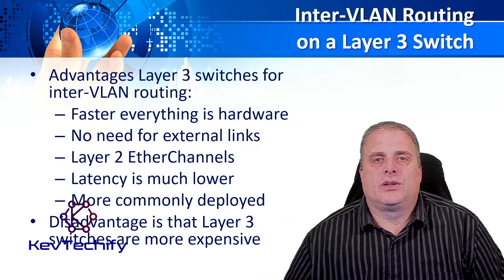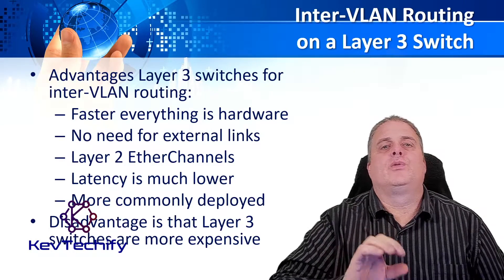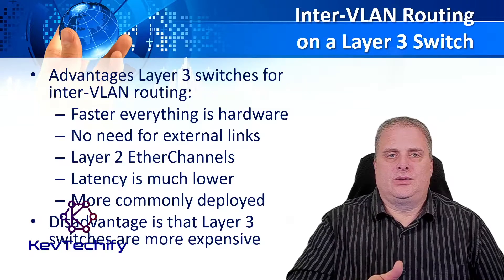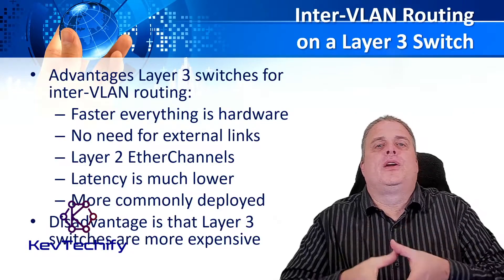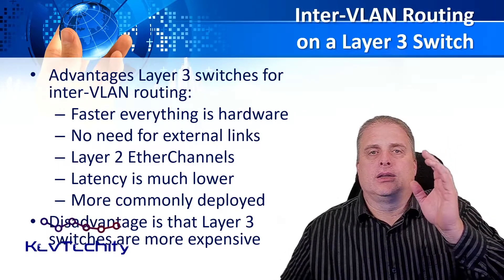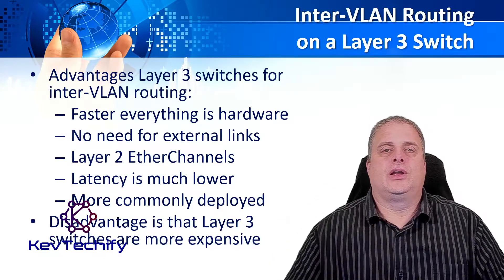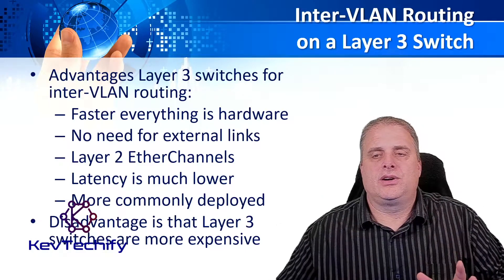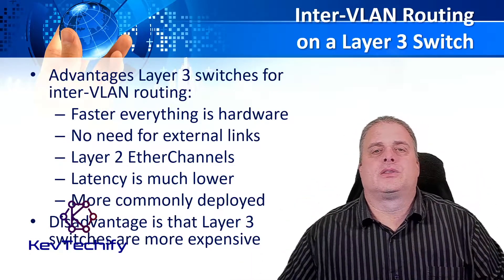Another advantage is we don't have to have any external links. Router on a stick has a switch with a trunk port going to a router. On a layer 3 switch, it's all in one device, done in hardware. We can also get higher bandwidth because we can use EtherChannel — combining multiple connections between devices into one virtual connection, giving you bigger throughput. You can have two 1GB ports giving you 2GB of throughput. With router on a stick, you can only have one connection — you can't do EtherChannel. Latency is a lot lower using a layer 3 switch, and we see that layer 3 switches are being deployed more and more. Router on a stick is on its way out.